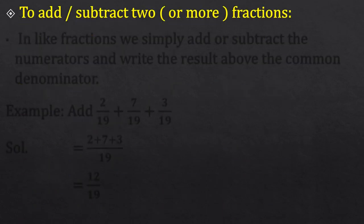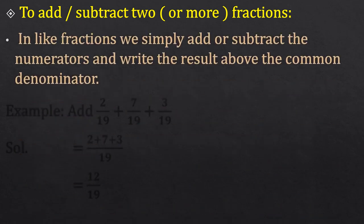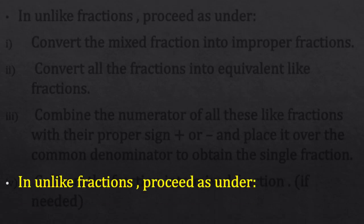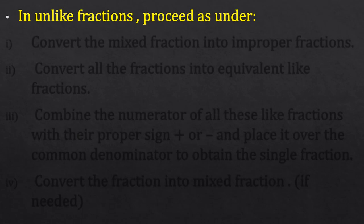Now let us see how to add and subtract fractions. For like fractions, simply add or subtract the numerators and write the denominator as it is. For example, 2 upon 19 plus 7 upon 19 plus 3 upon 19 — the denominators are the same, so add the numerators: 2 + 7 + 3 = 12, giving the answer 12 upon 19.